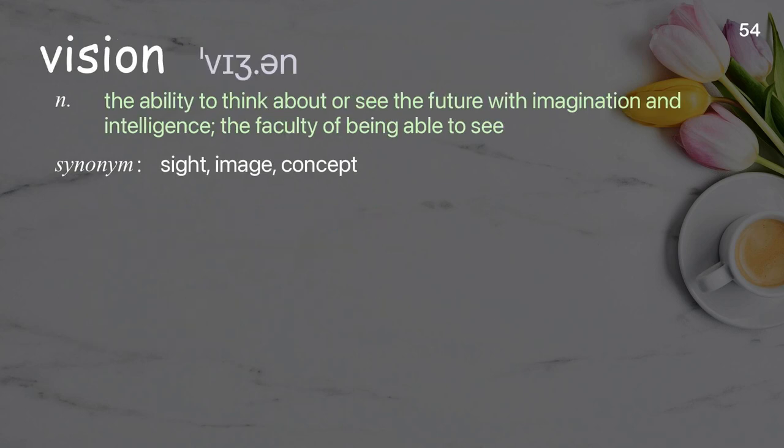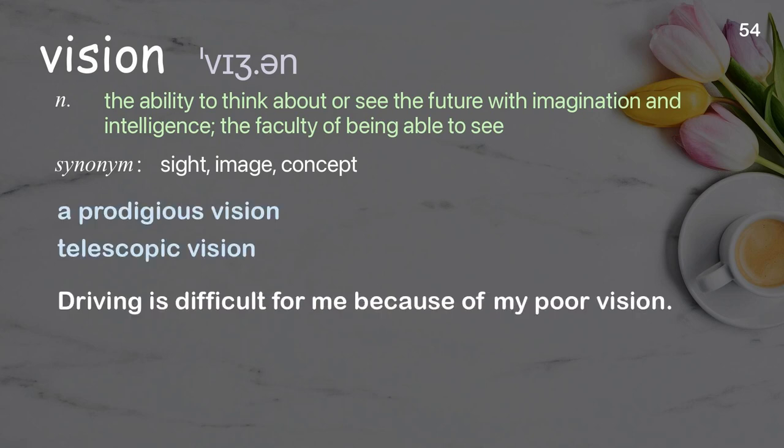Vision: The ability to think about or see the future with imagination and intelligence; the faculty of being able to see. Examples: a prodigious vision, a telescopic vision. Driving is difficult for me because of my poor vision.